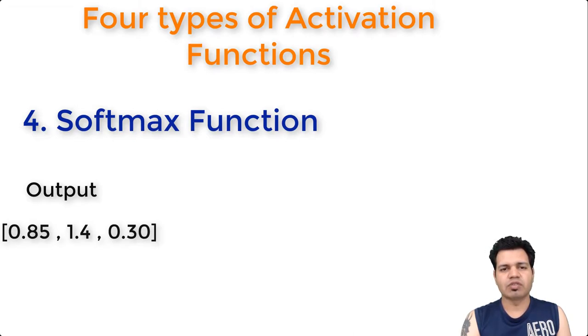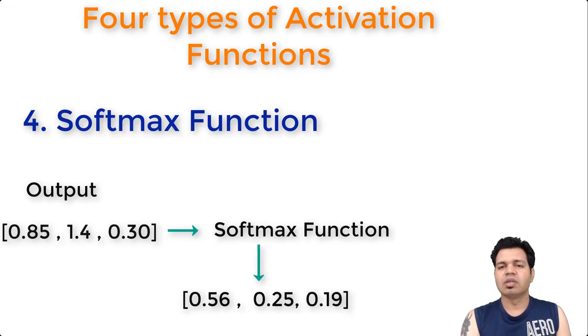Let's take an example. Let's say we have the outputs as 0.85, 1.4, and 0.30. Now when we apply the softmax function, we would get, hypothetically, the probabilities as 0.56, 0.25, and 0.19. Now we can use these probabilities for the value to be in each class. We can visualize that we have only three classes because we are seeing three probability values. The softmax function is ideally used in the output layer of the classifier where we are actually trying to attain the probabilities to define the class of each input.